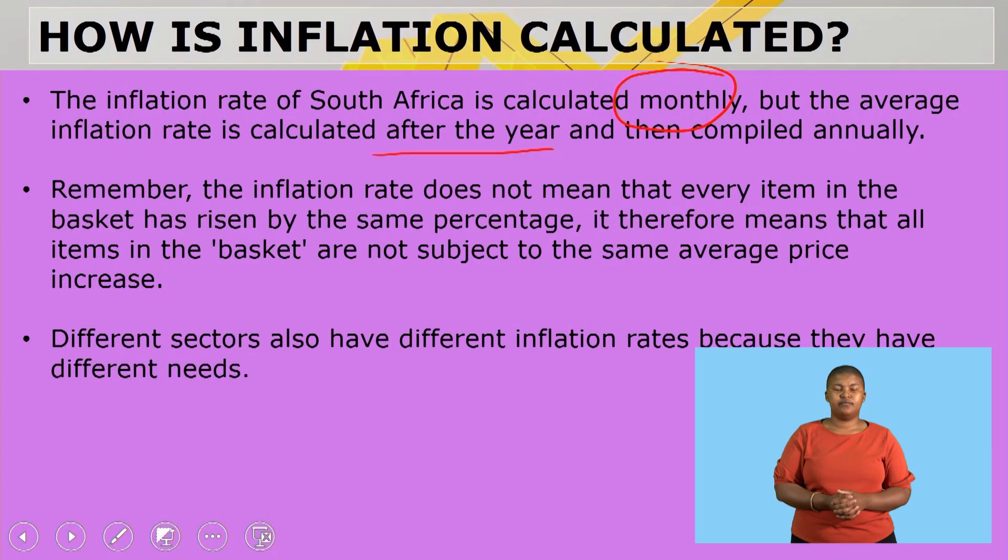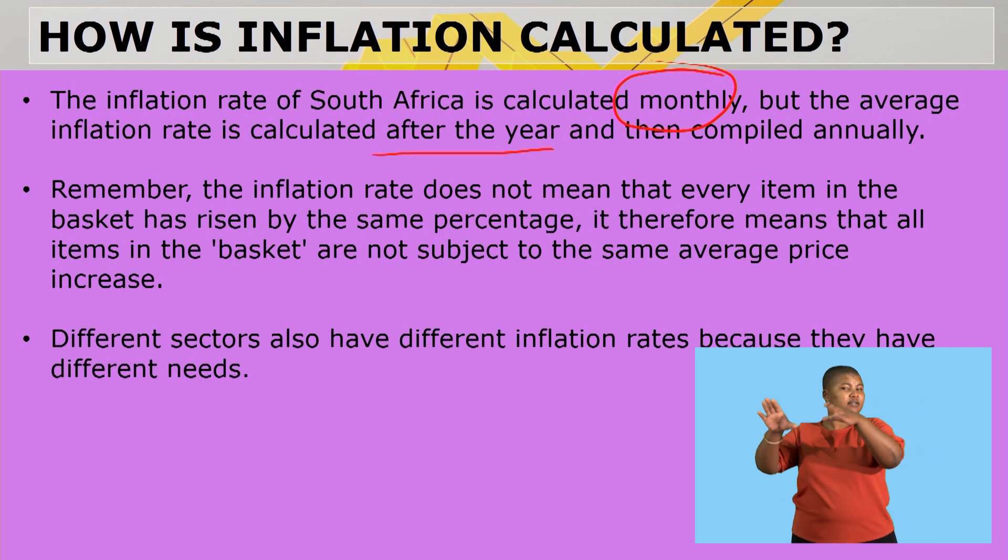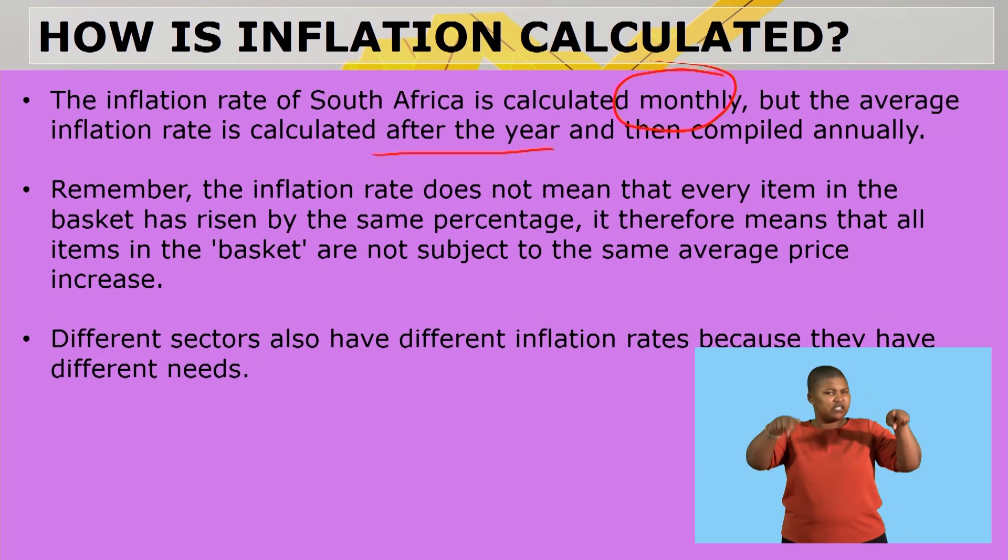It therefore means that all items in the basket are not subject to the same average price increase, as we showed when we looked at the table. Different sectors also have different inflation rates because they have different needs. If we look at a household versus a school: a household will need groceries, clothing, water and electricity, municipal services, and entertainment. Where a school will need paper, stationery, and also water and electricity, but they have other types of expenses — and that is why they have a different inflation rate.